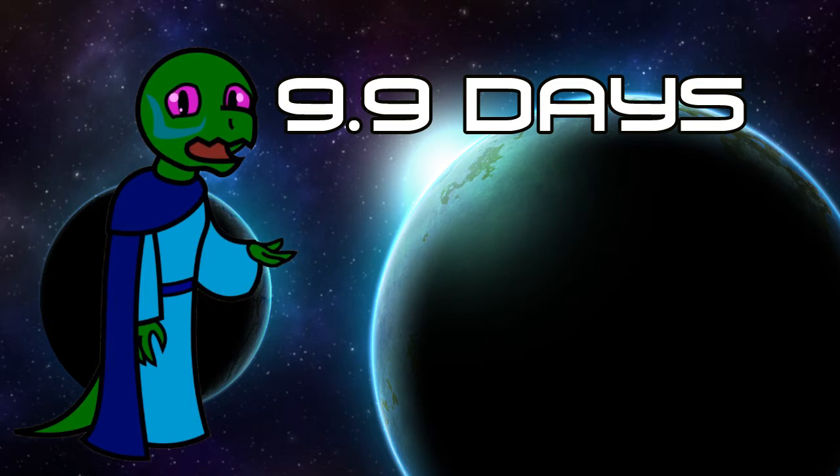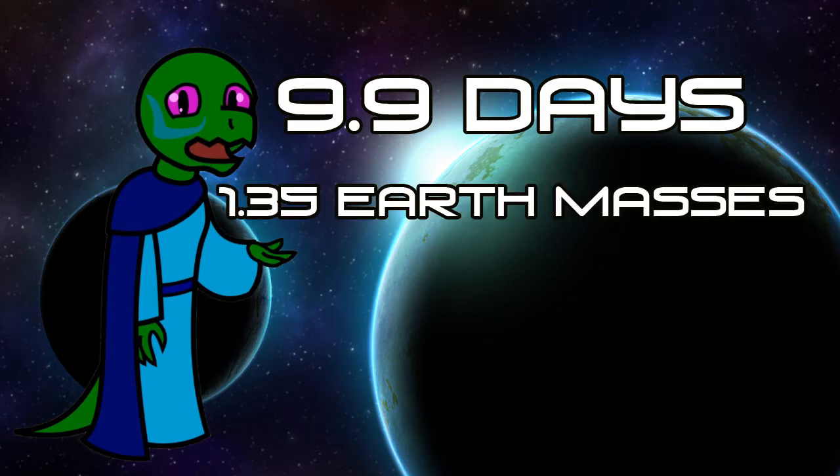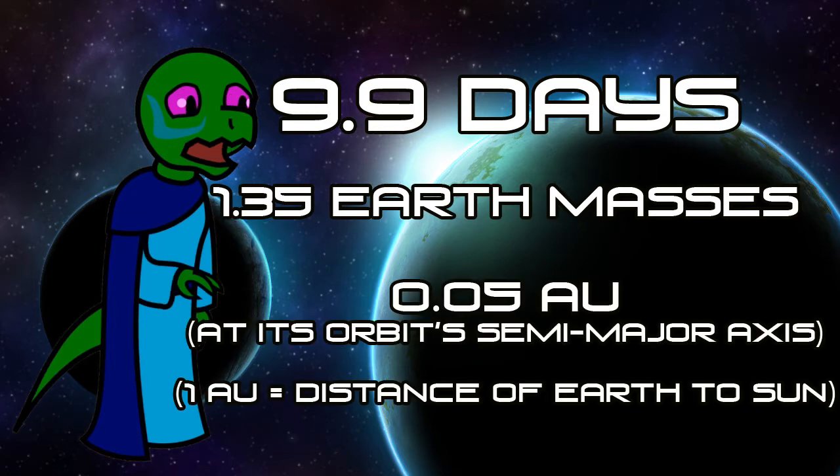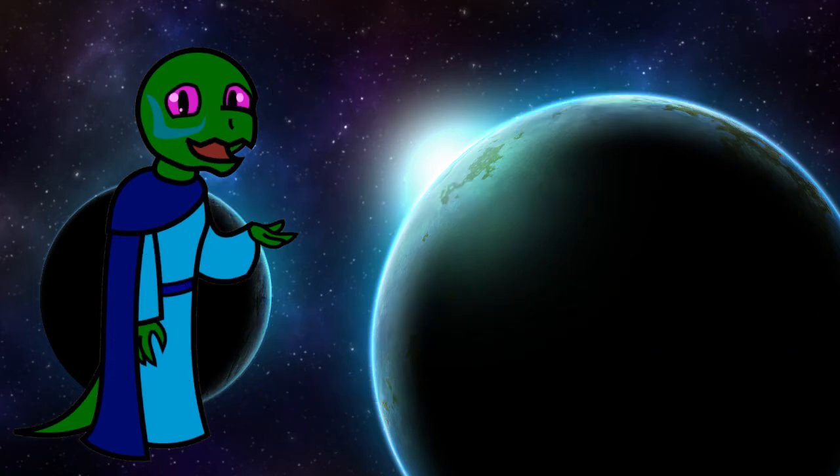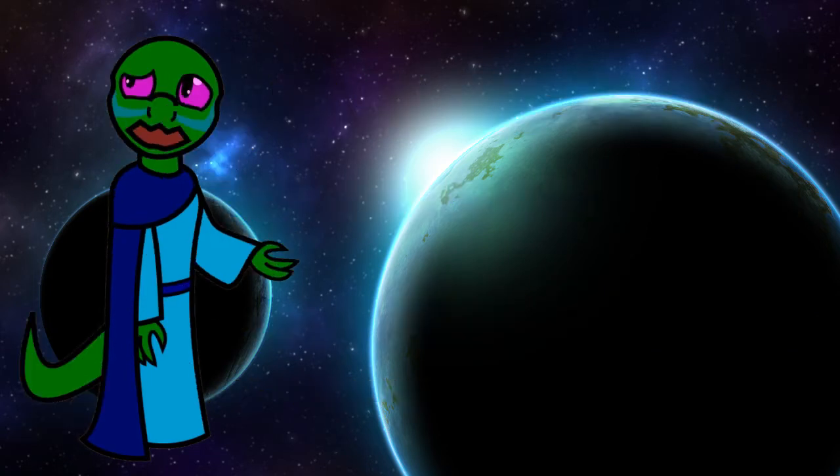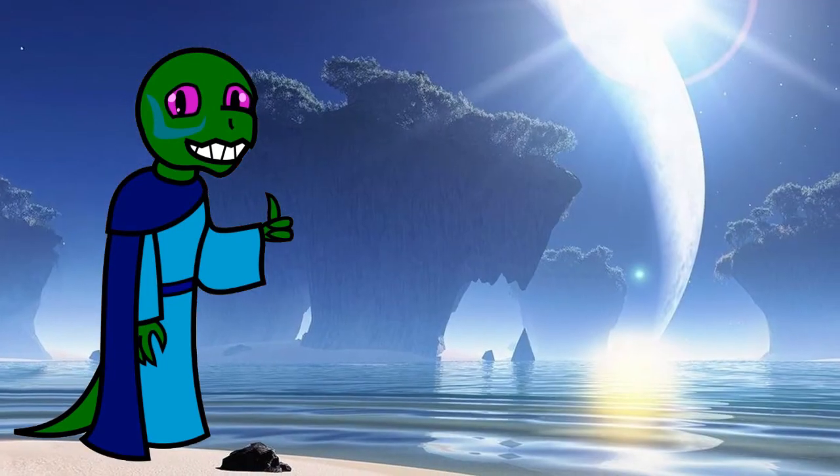The planet's mass is estimated to be around 1.35 times that of Earth's, and the radius of its orbit about 0.05 astronomical units, or AU. According to NASA, it sits in the inner range of the habitable zone, which, in a nutshell, means the possibility of liquid water.